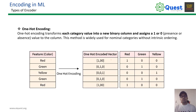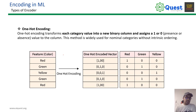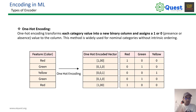One-hot encoding is another technique where we need to convert categorical data in a different way. This is very straightforward. Suppose we have a category of red, green, and yellow — these are the unique values in the column.